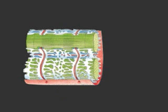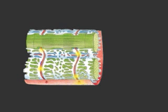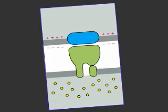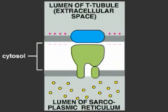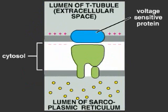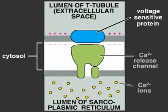When the cell is stimulated, a wave of depolarization — that is, an action potential — spreads from the synapse over the plasma membrane and via the T-tubules deep into the cell. A voltage-sensitive protein in these membranes opens a calcium release channel in the adjacent sarcoplasmic reticulum.